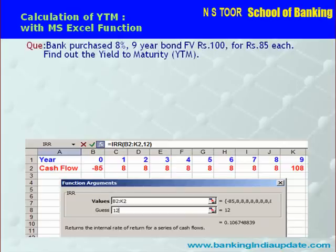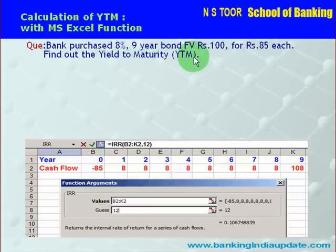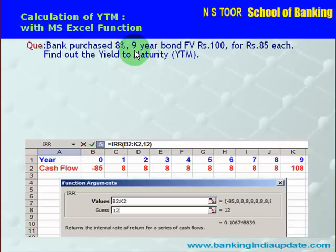First of all, we take this example: a bank purchased 8%, 9-year bonds with a face value of 100 rupees for Rs 85 each. Find out the YTM of this bond. So here the purchase price is Rs 85, the face value of the bond is Rs 100, the total maturity period is 9 years, and 8% is the coupon rate.